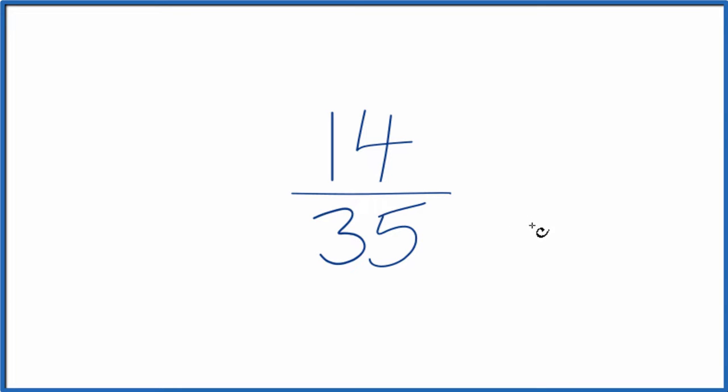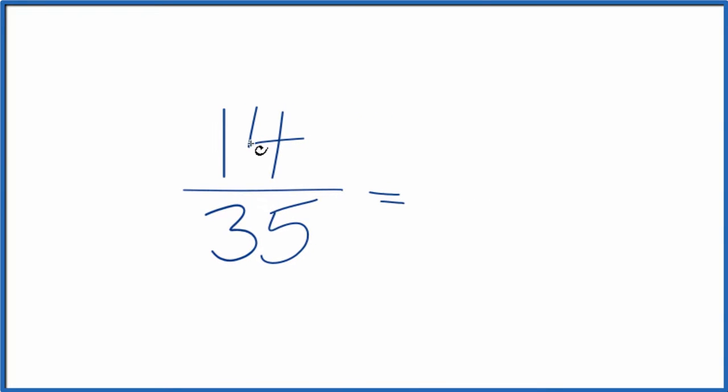So if you know your multiplication tables, you probably recognize that 7 goes into 14 and 35. So if we divide 14 by 7, we get 2. If we divide 35 by 7, we get 5. So the fraction 14 35ths equals 2 5ths. These are equivalent, just this is in lowest terms.